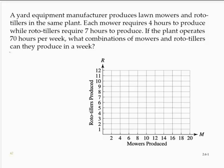A yard equipment manufacturer produces lawn mowers and rototillers in the same plant. Each mower requires four hours to produce, while rototillers require seven hours to produce. If the plant operates 70 hours per week, what combinations of mowers and rototillers can they produce in a week?